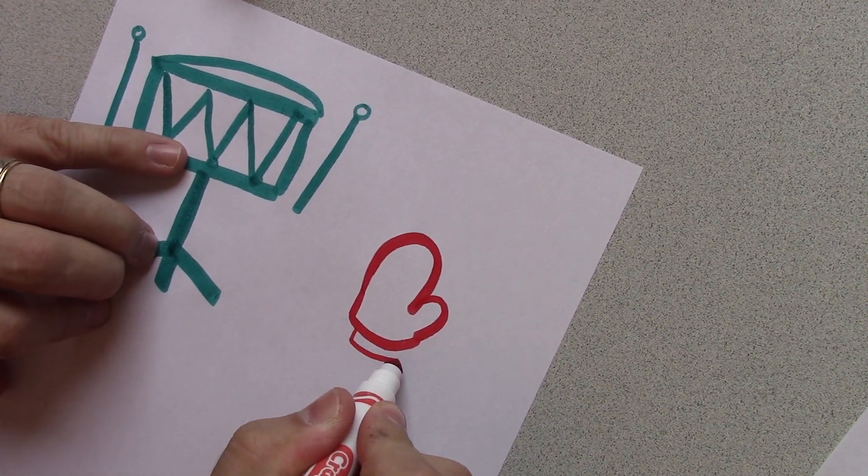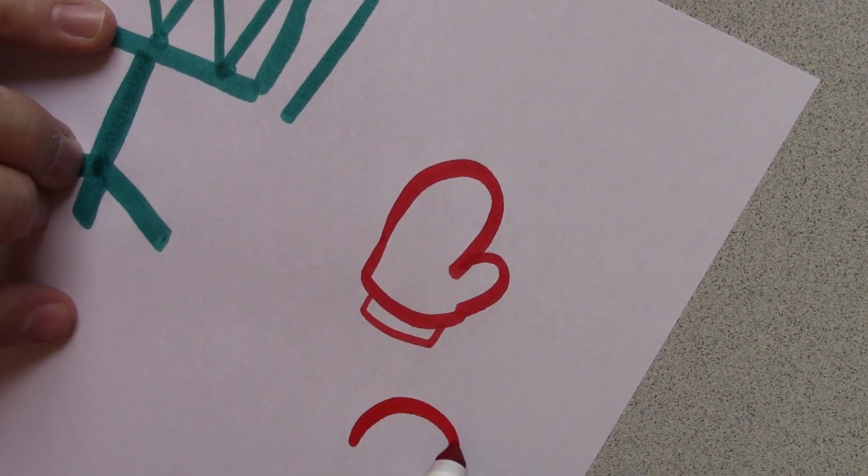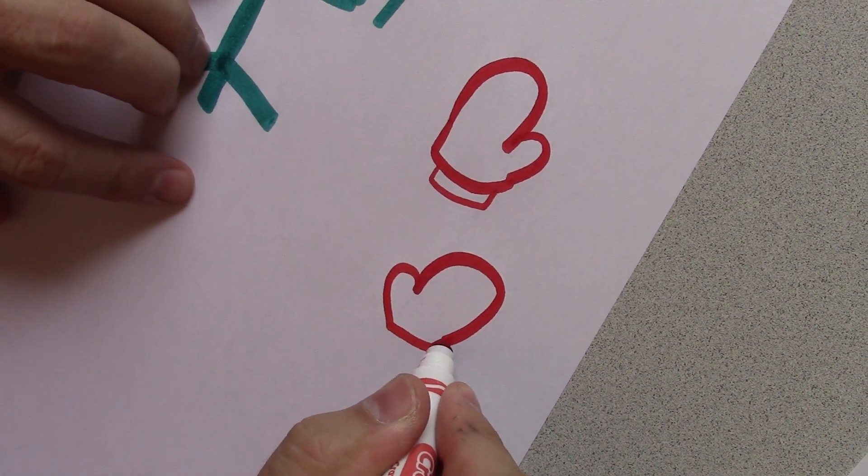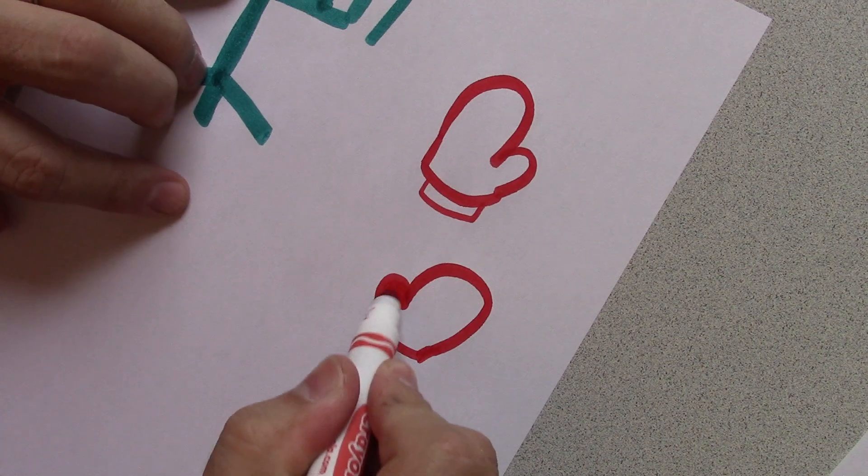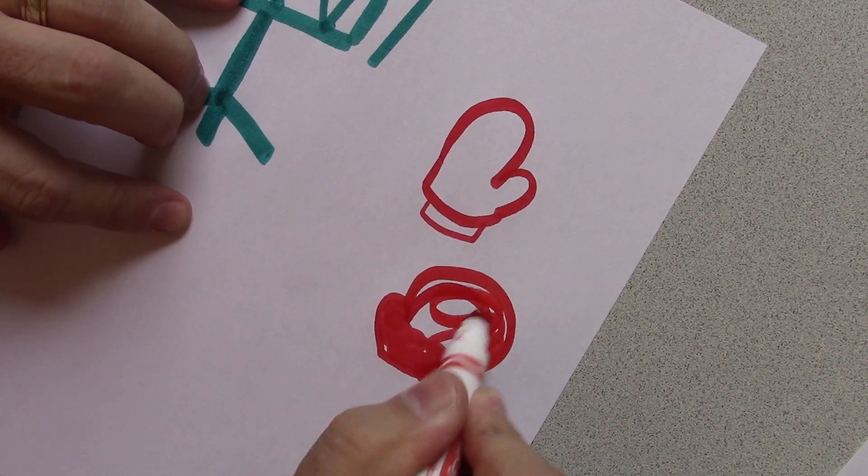There's a mitten. You know, put a little sleeve on it there. And then we can draw another one. Another mitten. You can turn that into a cooking glove, you know, or you can color it in like this, make it a little bit bigger. And all of a sudden it's a boxing glove.